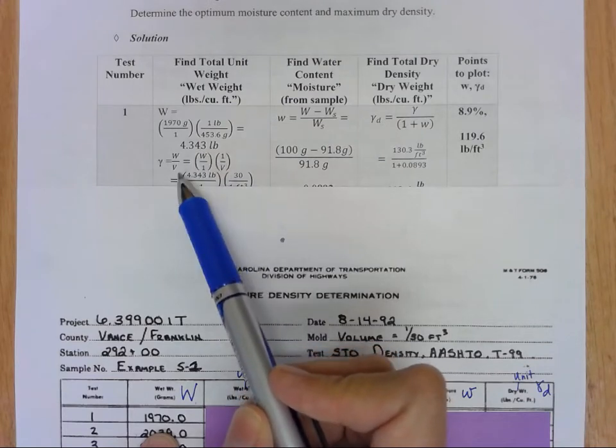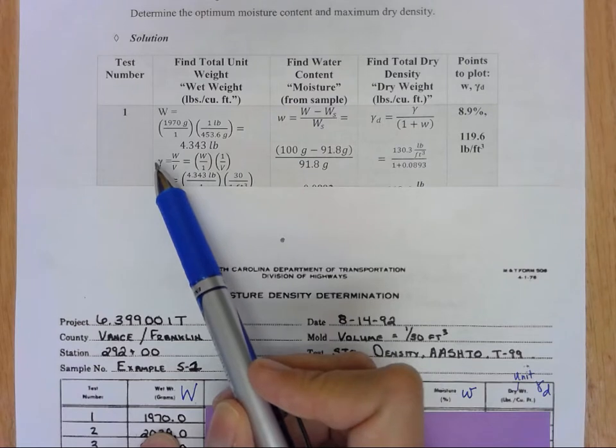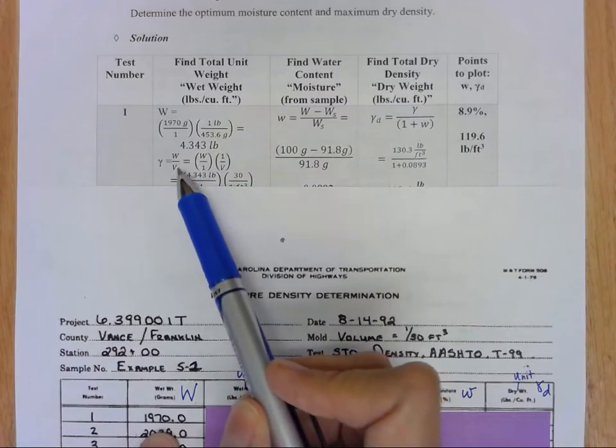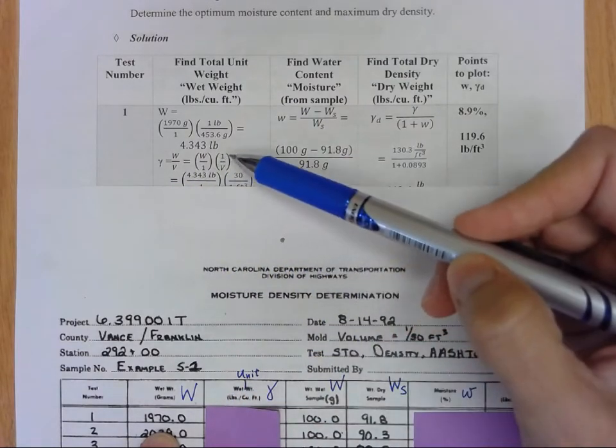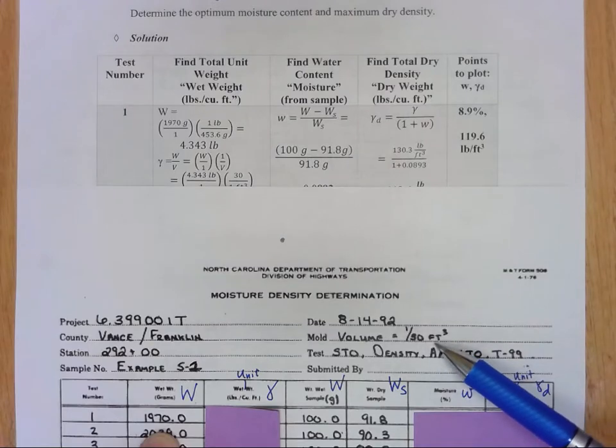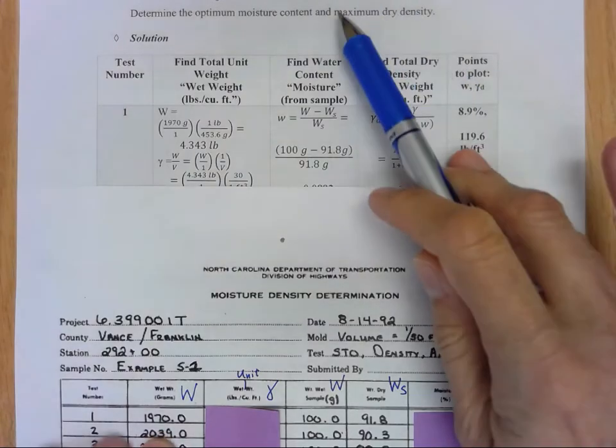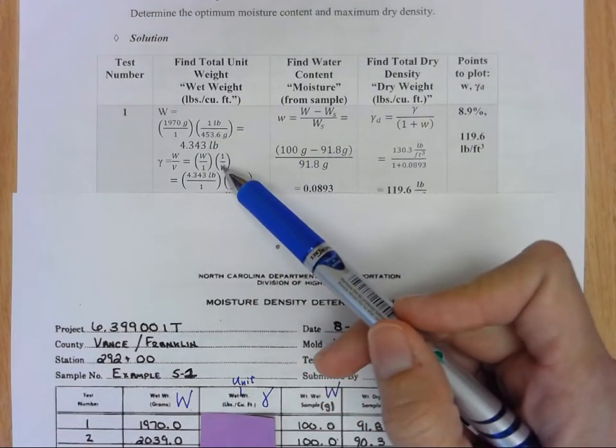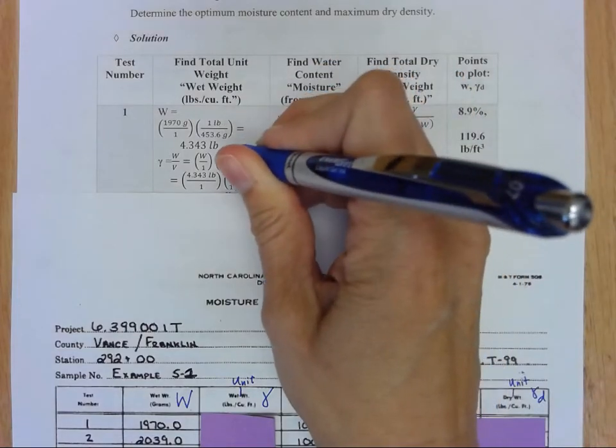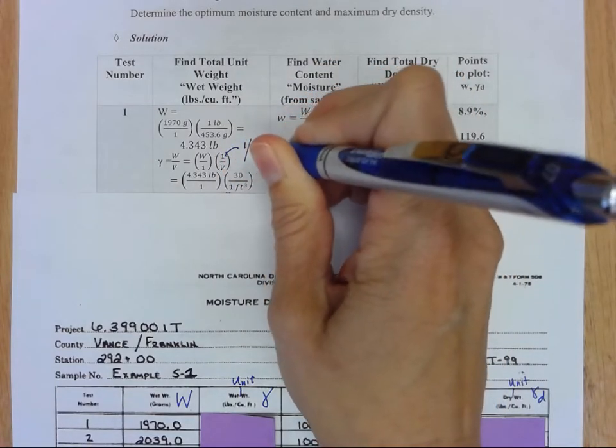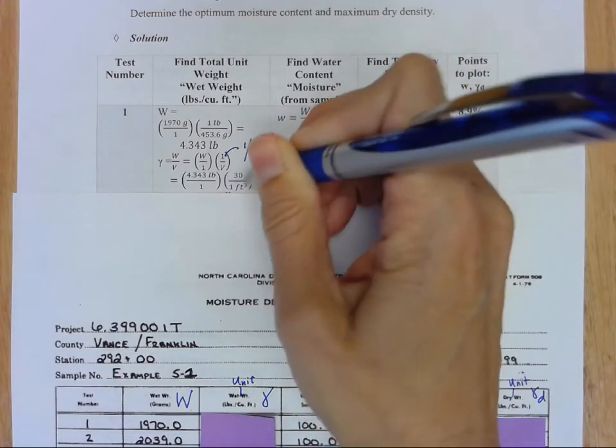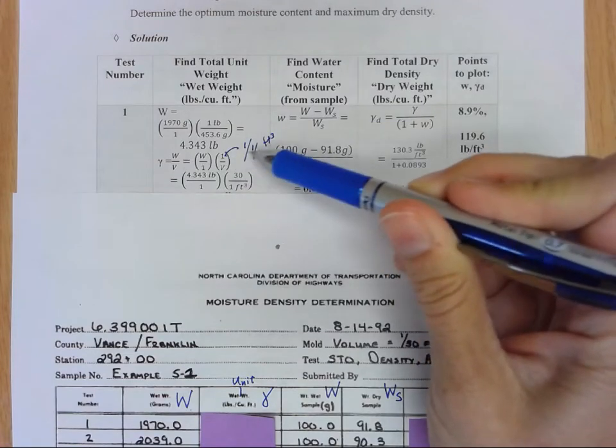Take that out to three decimal places and then we're going to find that total unit weight just like from our phase relationships: it's equal to total weight over total volume. Remember our total volume here is that 1/30th of a cubic foot. So when I do that I essentially have that number here times 1 over—this would be 1 over 1/30 cubic feet.